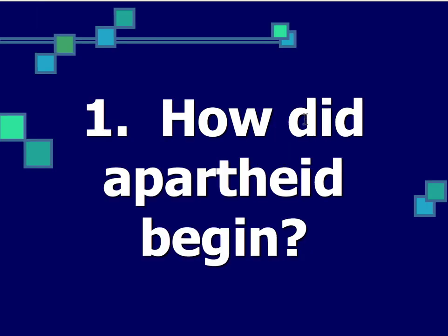The first question is: how did apartheid begin? In 1910, South Africa wins self-rule from Great Britain. South Africa was the richest nation in Africa with its large amounts of natural resources, and it was considered a settler colony — like Kenya and Algeria — with a large number of British and Dutch settlers who had permanently lived in South Africa.